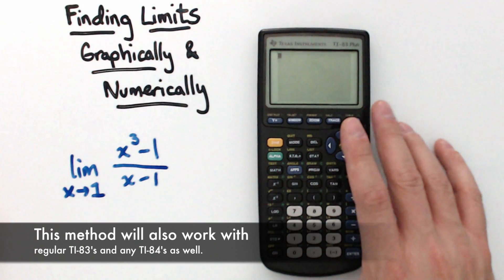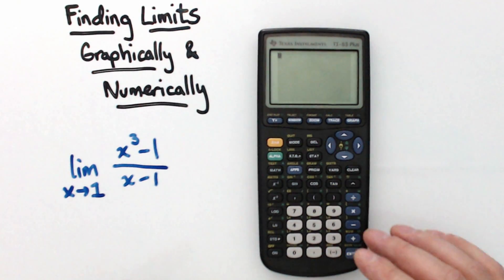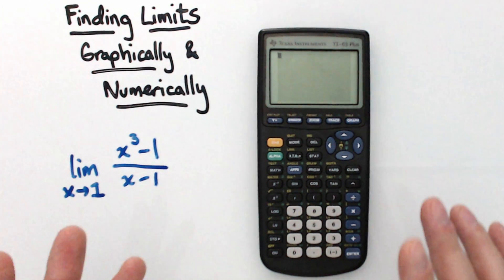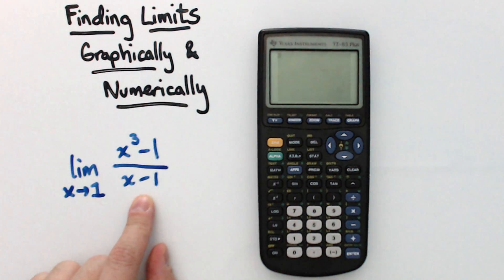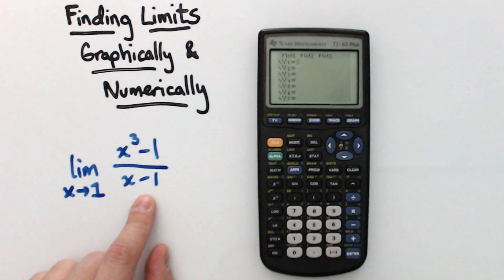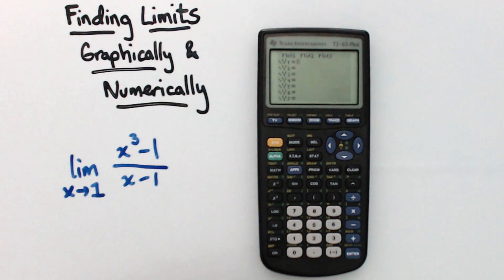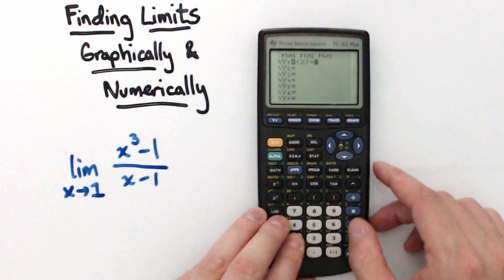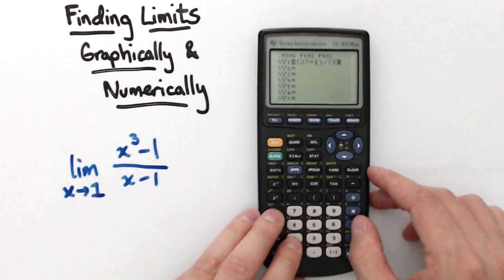All you really need to do these problems is a calculator, because there's no real showing of work — you can graph on the calculator and make a table to do it numerically. The first thing I'm going to do is put this function, x-cubed minus 1 over x minus 1, into Y=. It's really important to note that the numerator has to be in parentheses and the denominator as well. So I'll enter x-cubed minus 1, divided by, parentheses x minus 1.